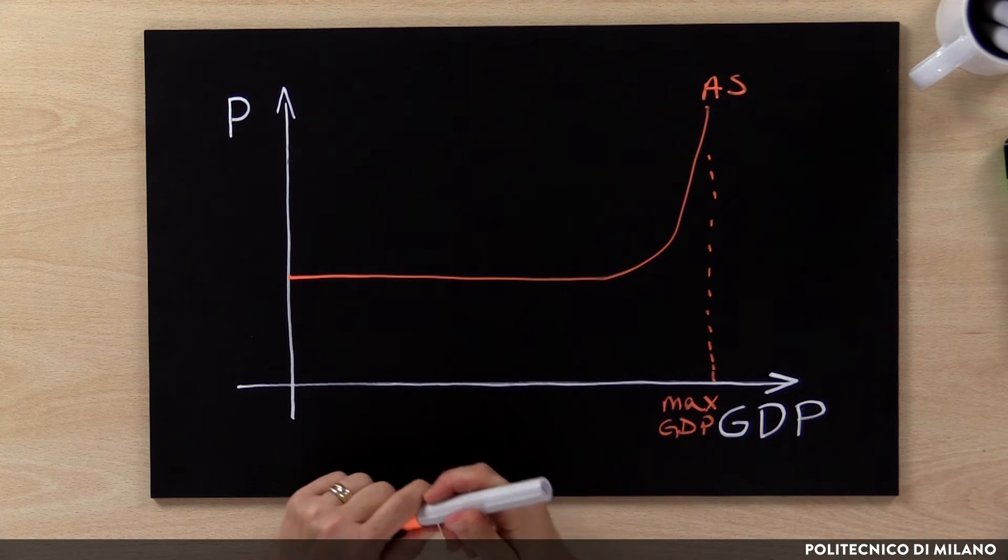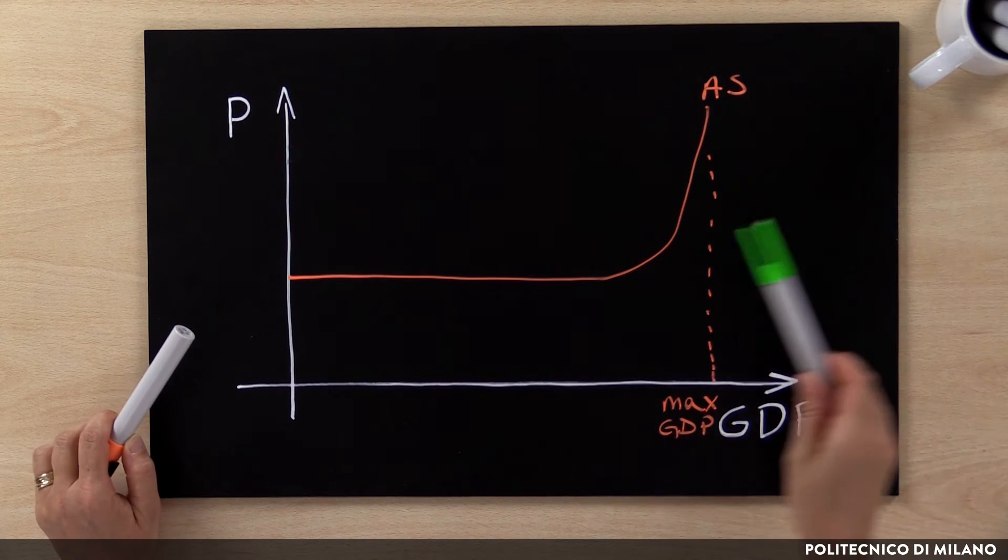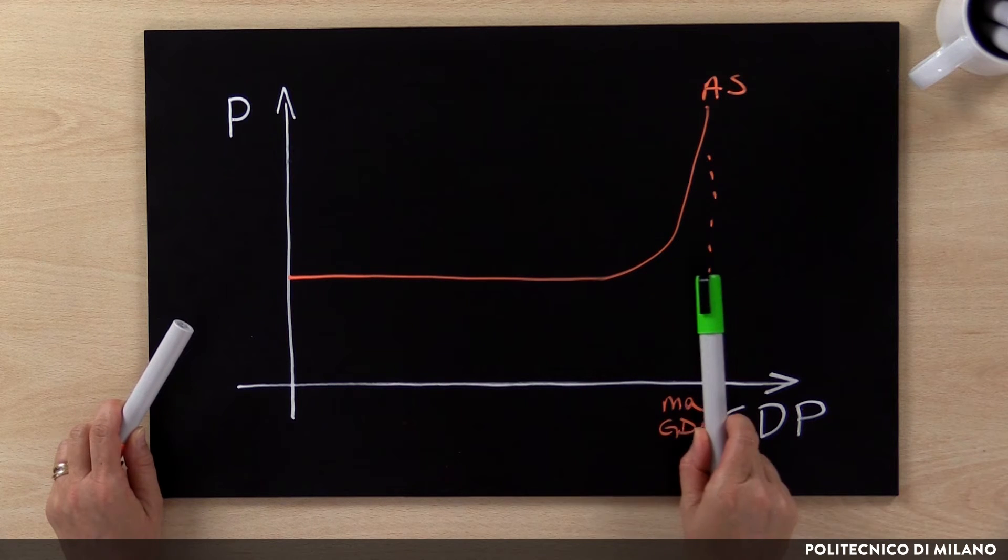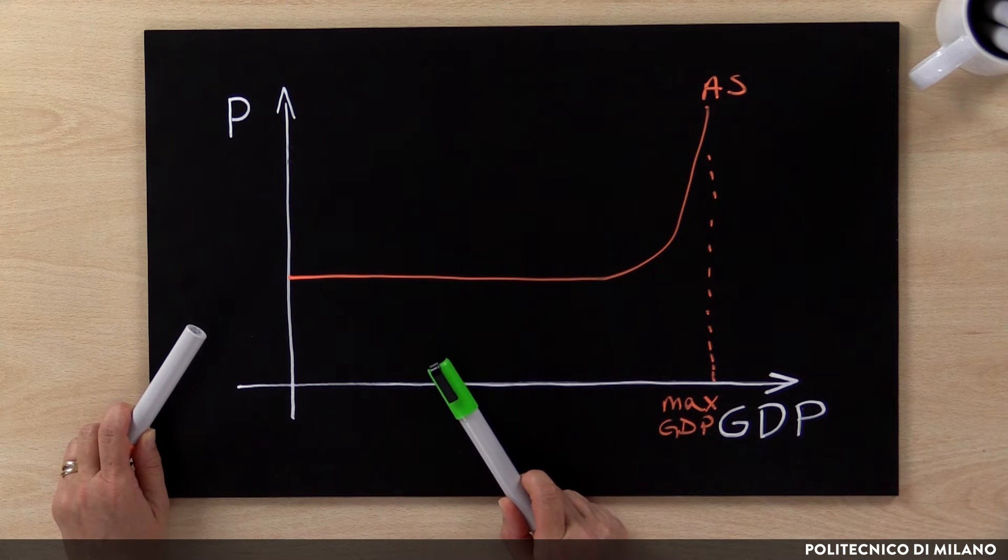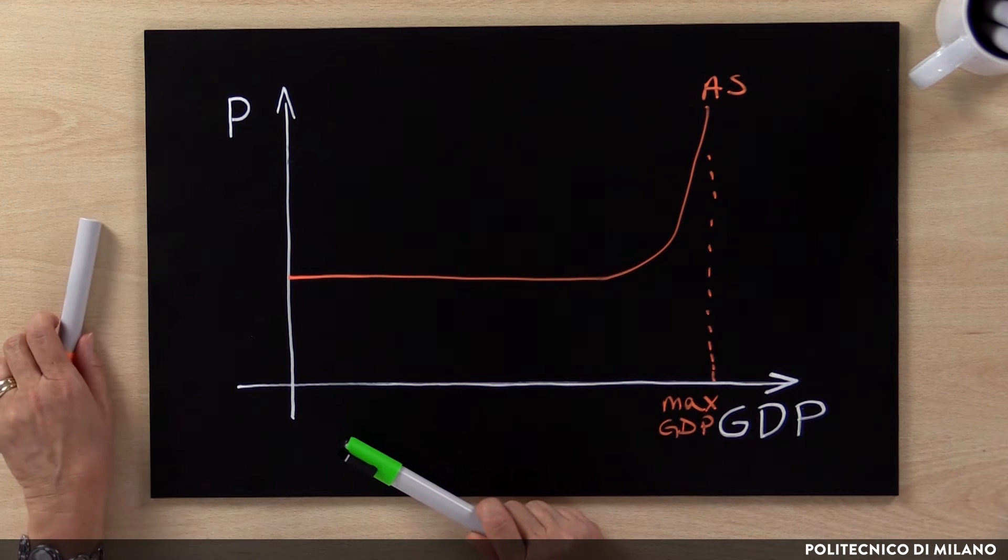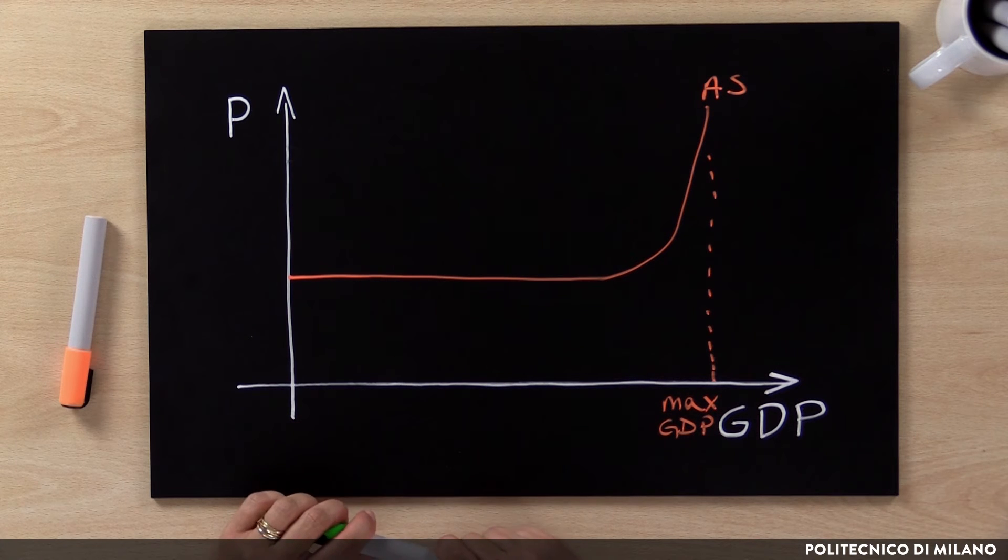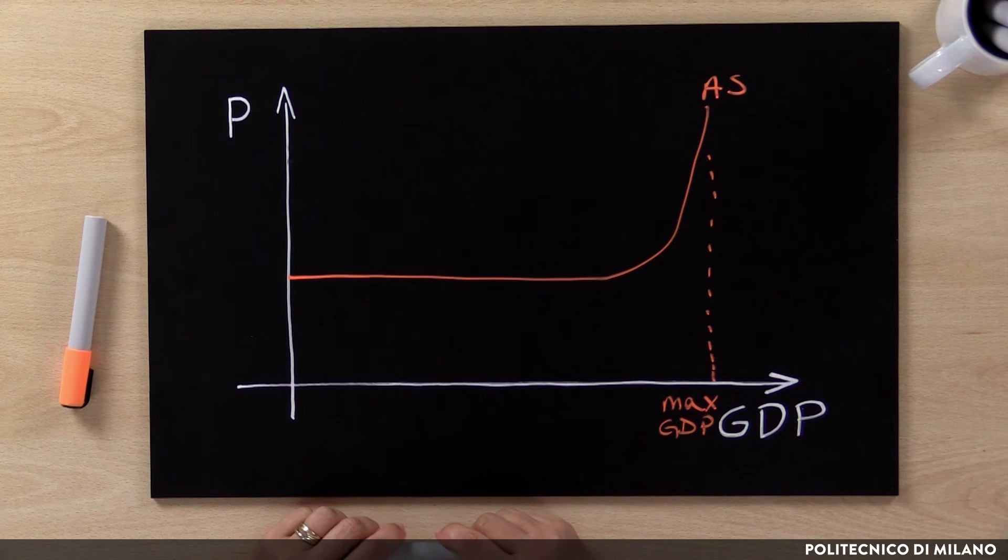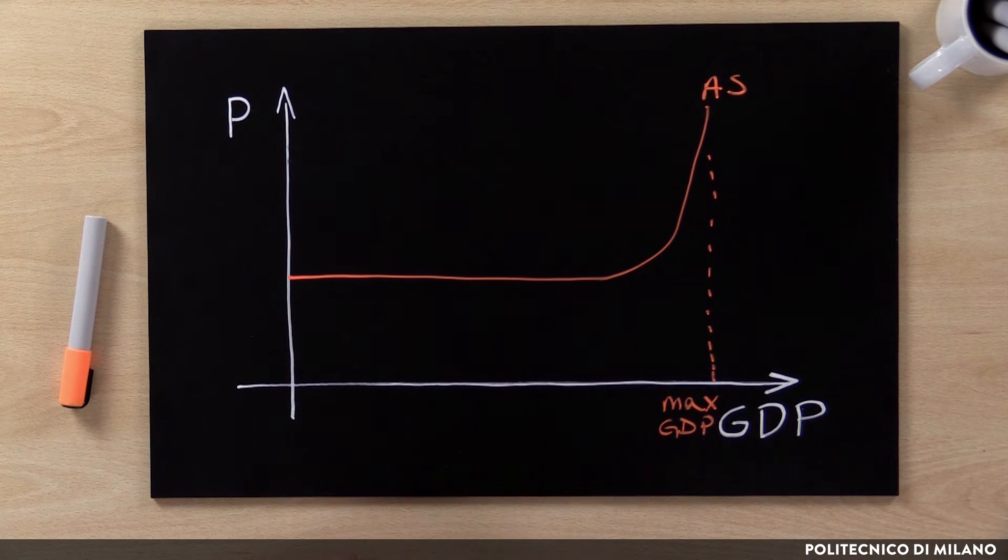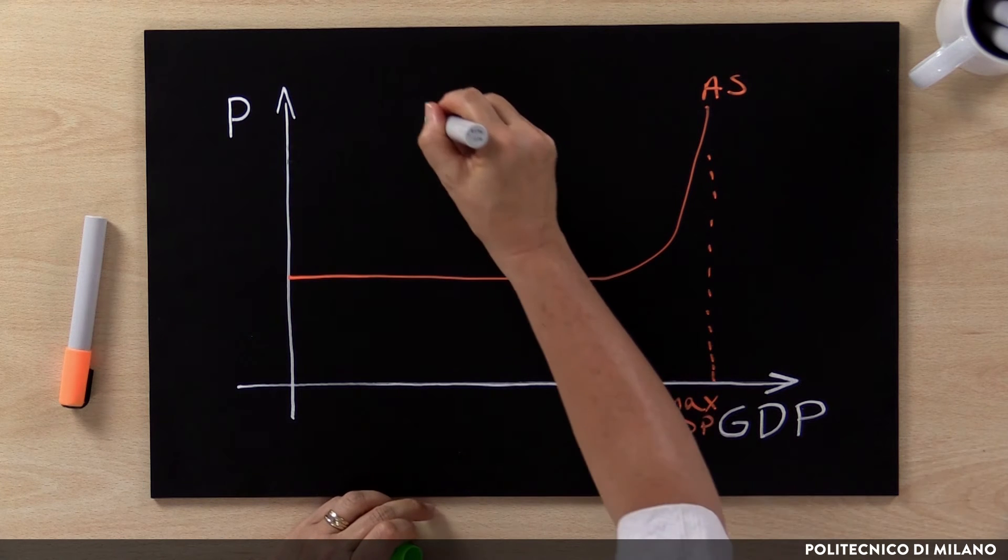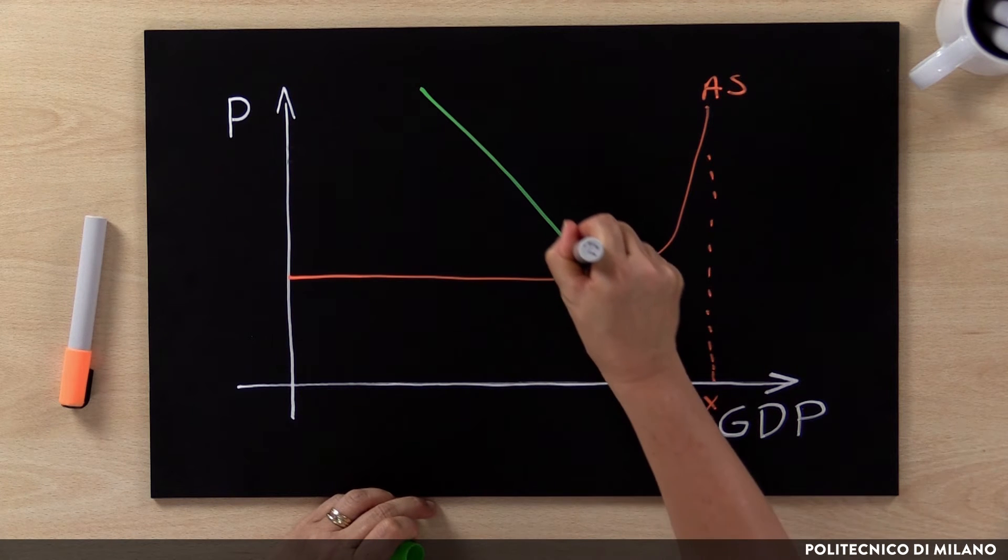The assumption here is that prices are stable when we are far away from the maximum level of GDP that can be obtained in the short-run. But prices will tend to increase when we are closer to the full employment level of GDP. What determines the actual current level of GDP is the position of aggregate demand.